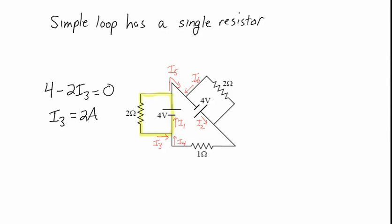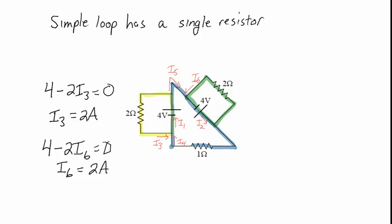We've already eliminated one unknown. Another simple loop: go up the battery, plus four, then down this resistor, minus 2·I6, back to the starting point. So four minus 2·I6 equals zero, meaning I6 equals 2 amps as well. The third simple loop is the triangle. We start here, go up one battery — plus four — then go down the other battery — plus four — and go across this 1-ohm resistor, which gives minus 1·I4. So four plus four minus I4 equals zero, meaning I4 equals 8 amps. So we've immediately solved for three of the six variables.